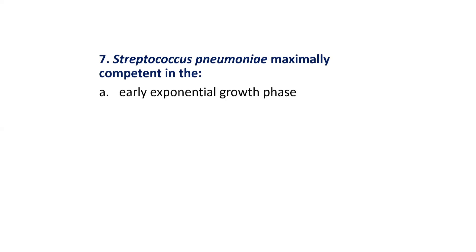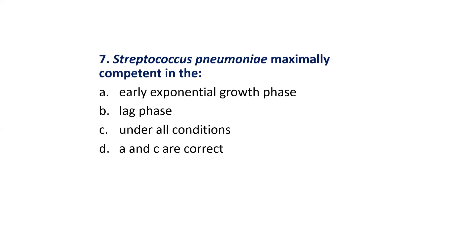MCQ 7: Streptococcus pneumoniae is maximally competent in — Options are: Early exponential growth phase; Lag phase; Under all conditions; A and C are correct. The correct answer is Option A: Early exponential growth phase.